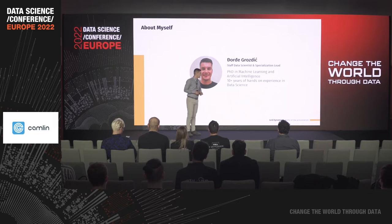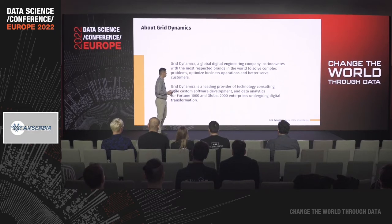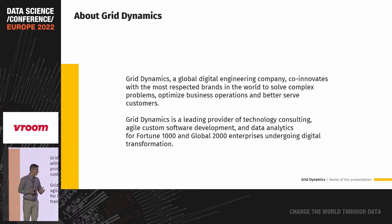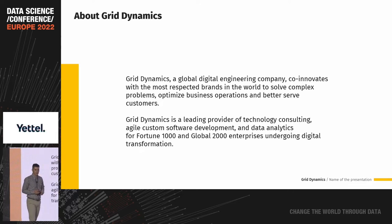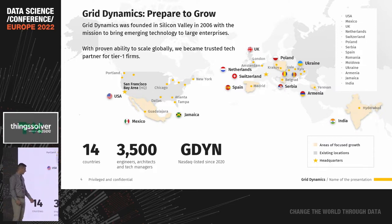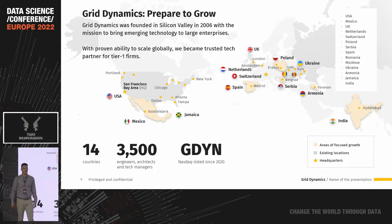I'm a staff data scientist and specialization lead at GridDynamics. GridDynamics is a global digital engineering company — a leading provider of technology consulting, agile custom software development, and data analytics for Fortune 1000 companies. GridDynamics has offices across 14 different countries and more than 3,500 employees. The office in Serbia was opened in 2018, and we currently have more than 470 employees in Belgrade, with more than 120 data scientists.